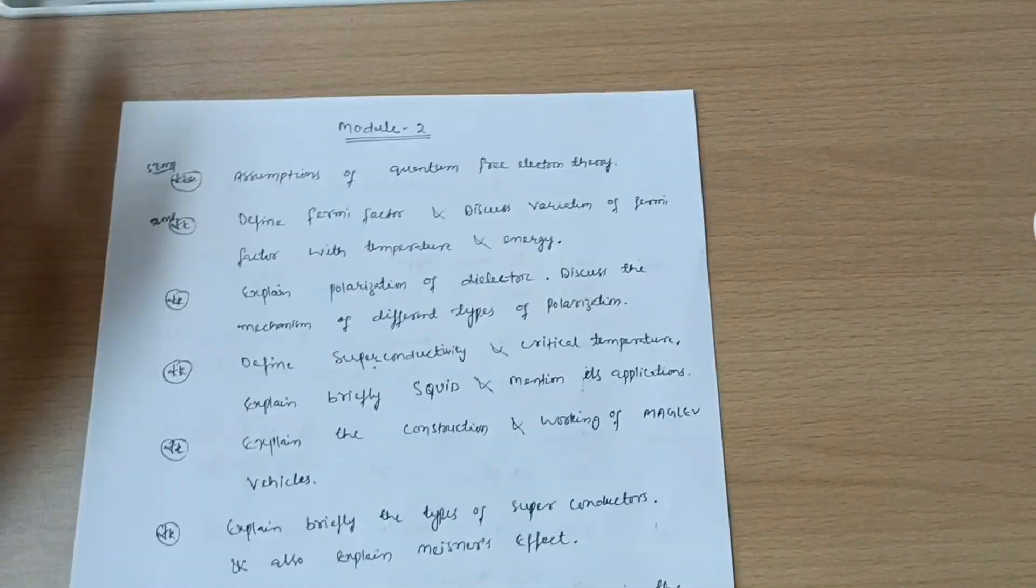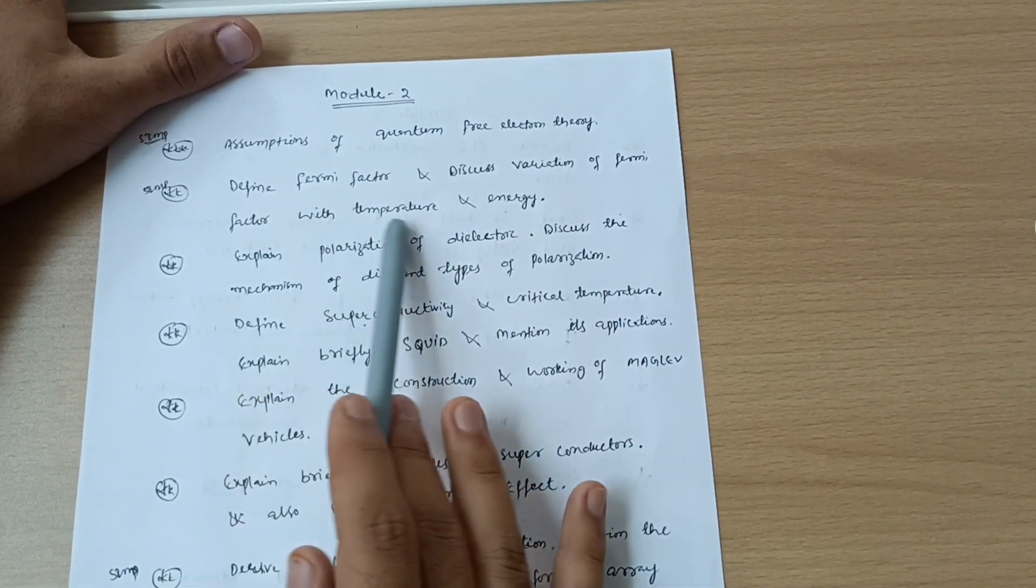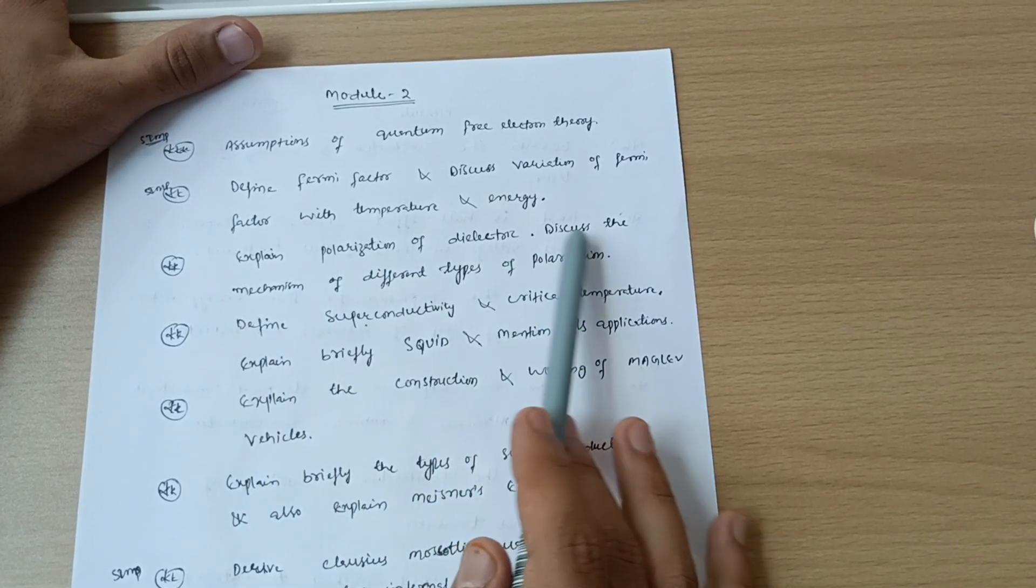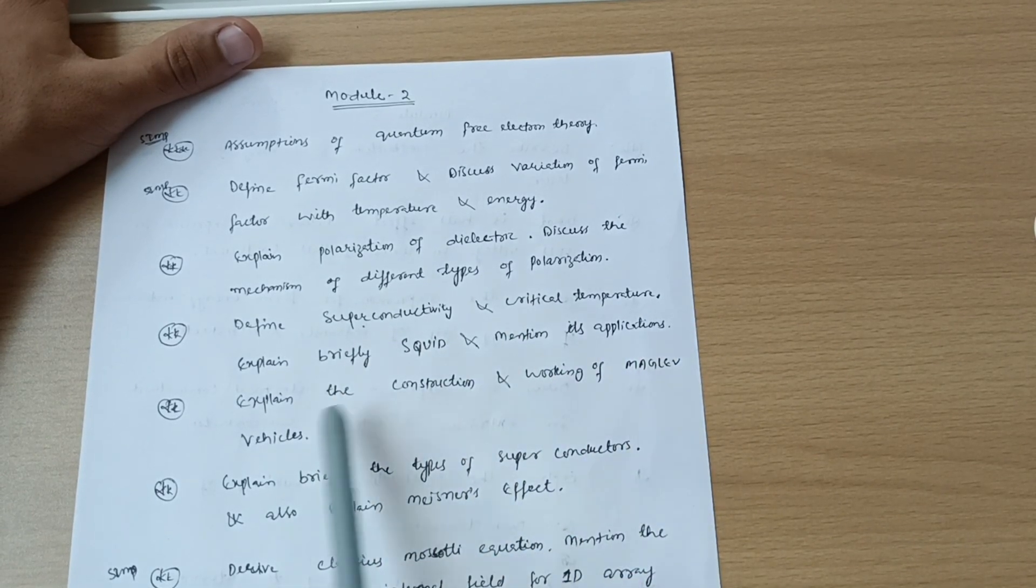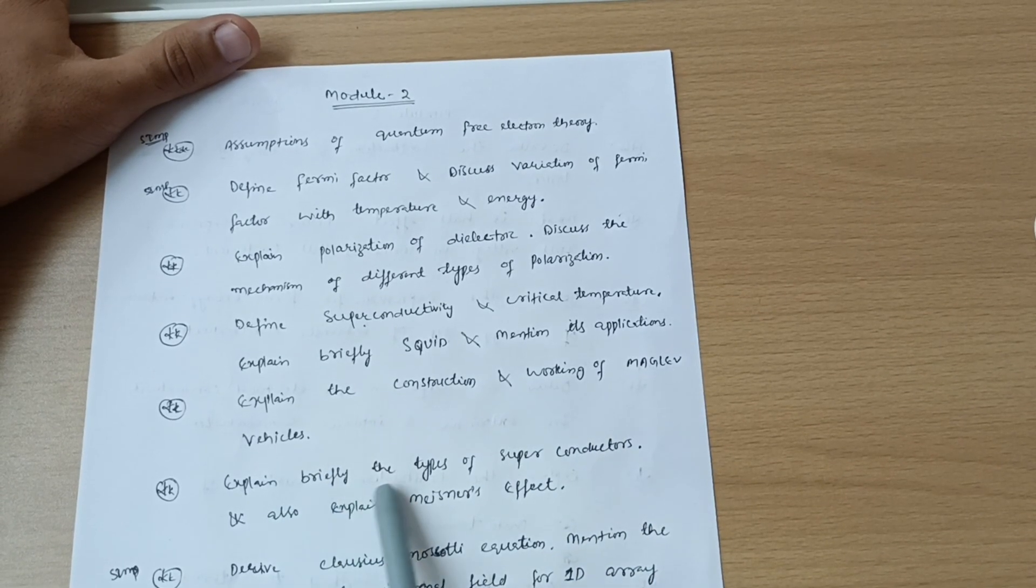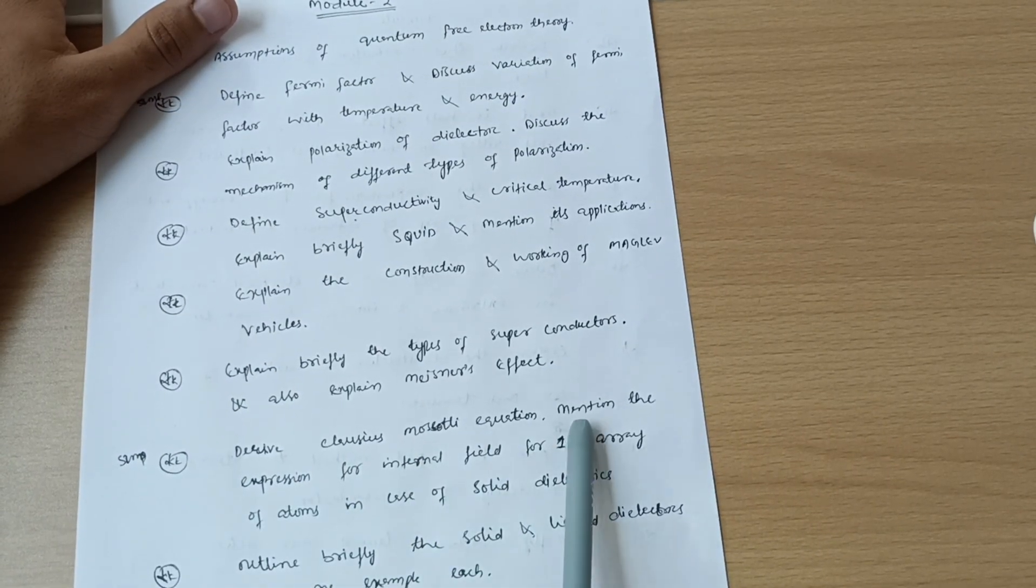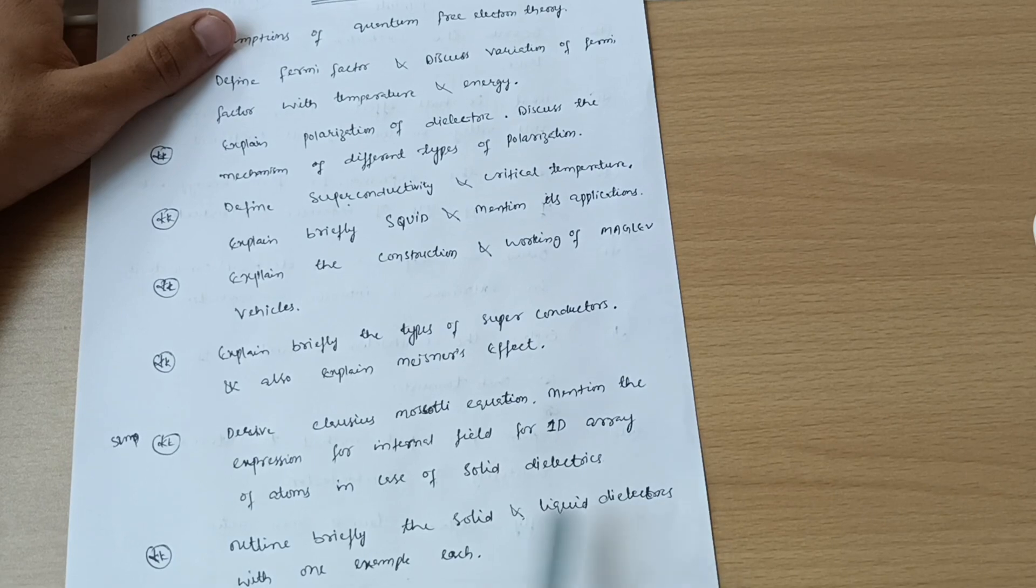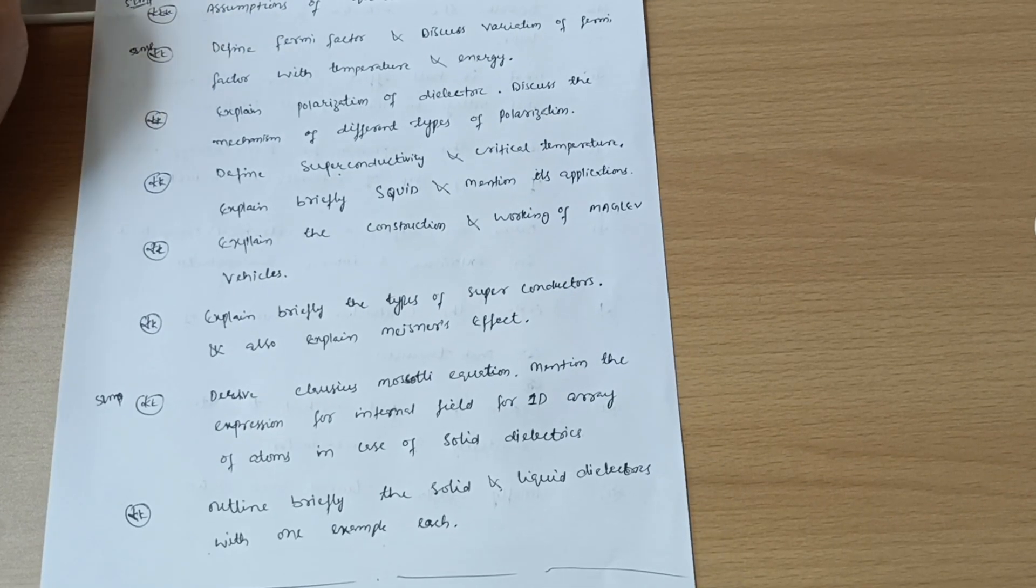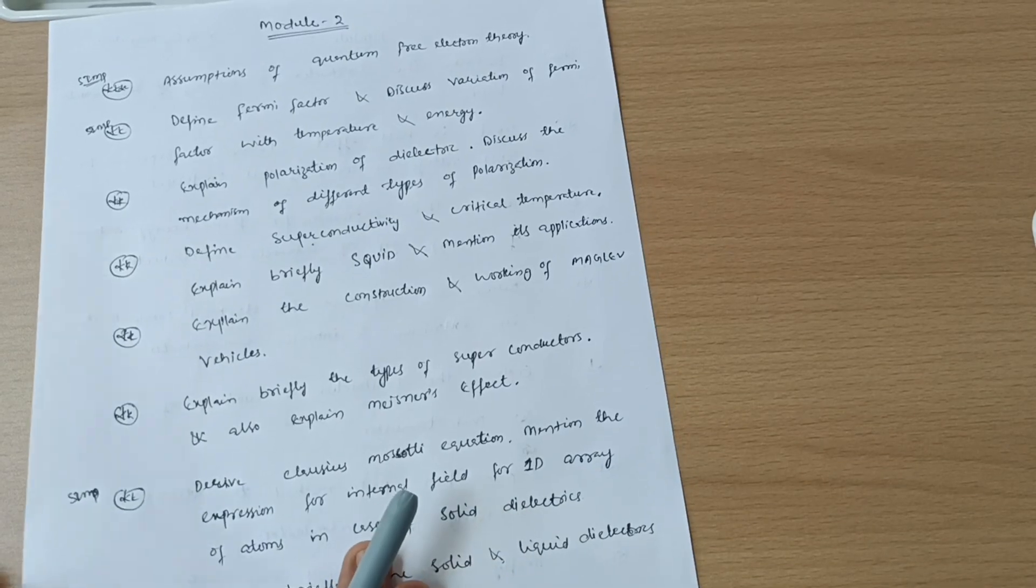I'm not taking all the syllabus portion, that is why the purpose is to make these important questions so that you can find some relief. This much portion is enough in module fifth. Now module two in which you have to cover assumptions of quantum free electron theory and define Fermi factor and discuss variation of Fermi factor with the temperature and energy. And explain polarization of dielectric, discuss the mechanism of different types of polarization. Define superconductivity and critical temperature, explain briefly SQUID and mention its applications. Explain the construction and working of Maglev vehicles and explain briefly the types of superconductors and also explain Meissner's effect. Now the derivation part is derive Clausius-Mossotti equation, mention the expression for internal field of one-dimensional array of atoms in case of solid dielectrics, and outline briefly the solid and liquid dielectrics with one example each. These are the eight questions from module two which I have taken from the different papers, previous year papers, so that you can score in the physics subject.